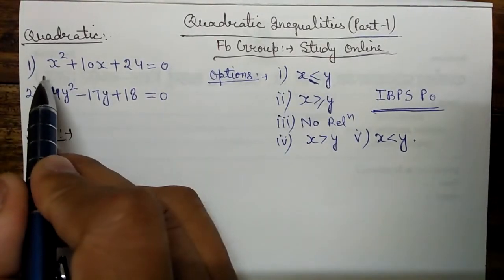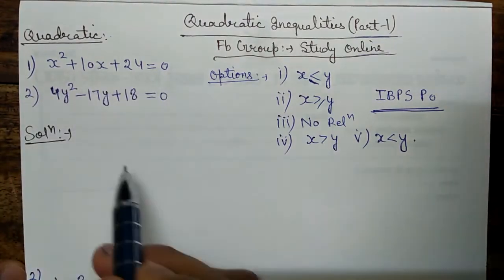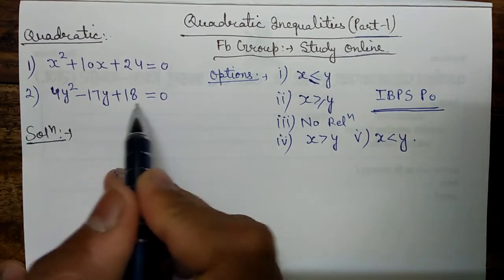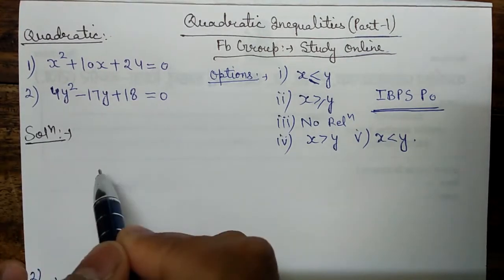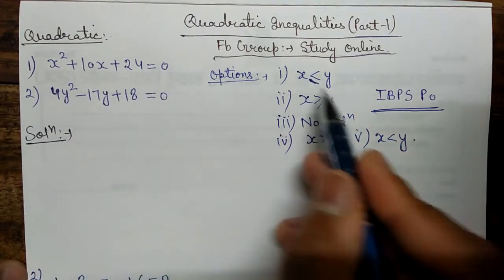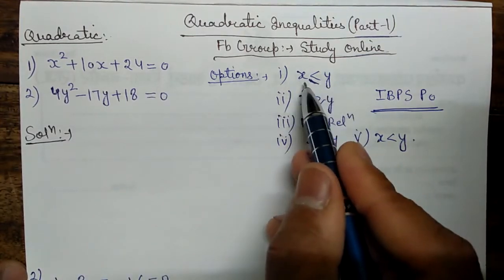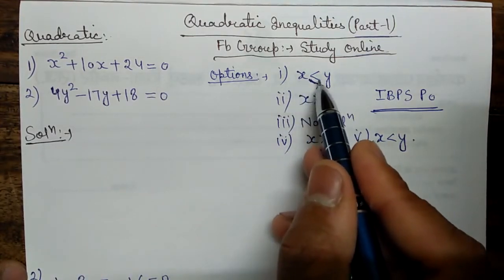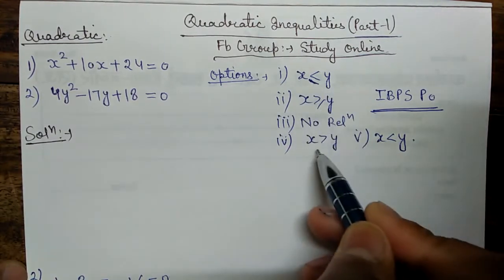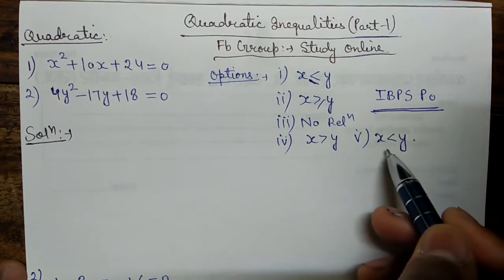This is the equation: x² + 10x + 24 = 0, and 4y² - 17y + 18 = 0. We have to establish the relation between x and y. The options are whether x ≤ y, x ≥ y, there is no relation, x > y, or x < y.